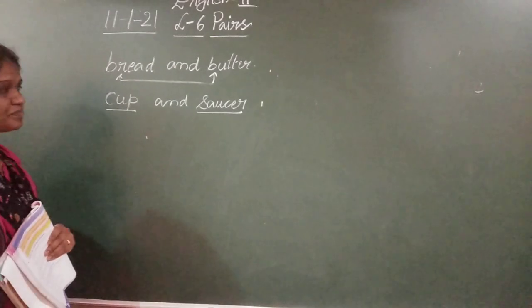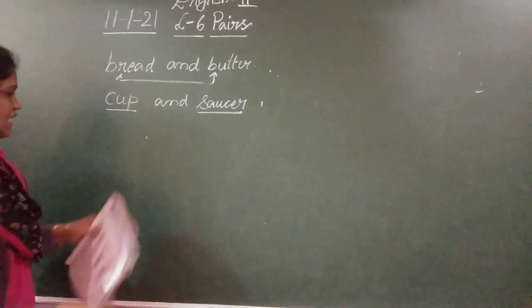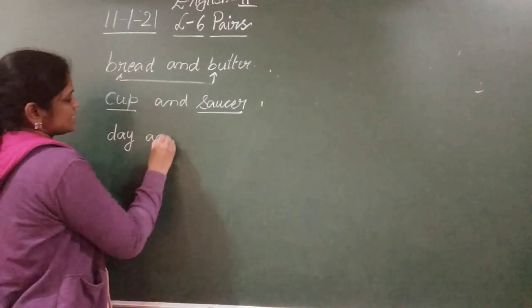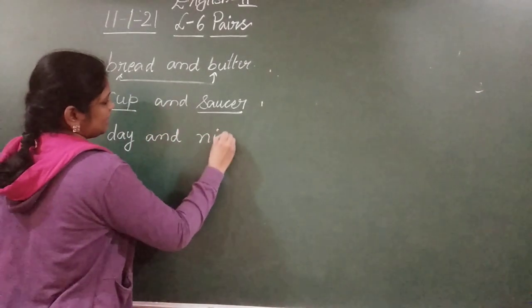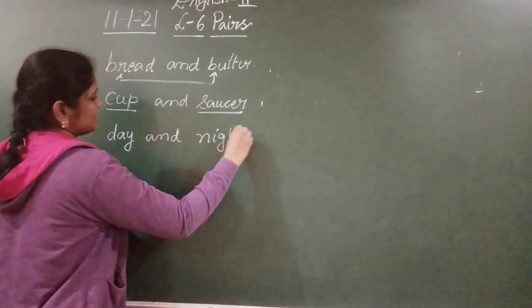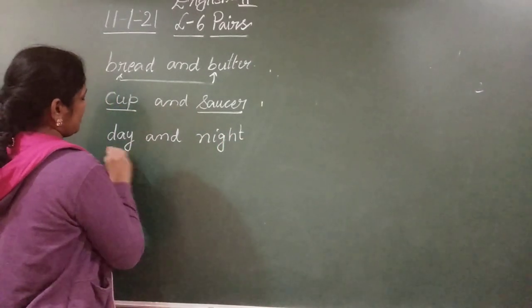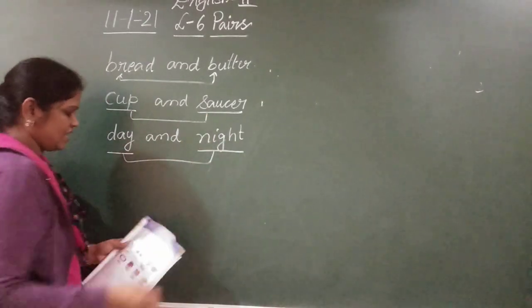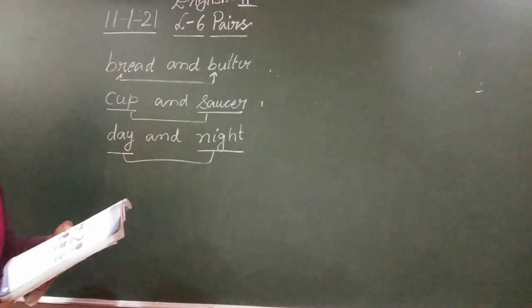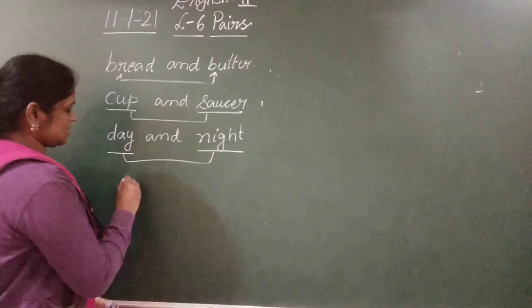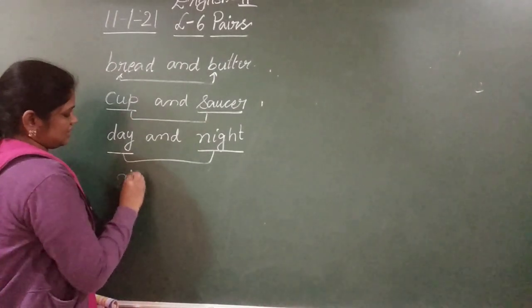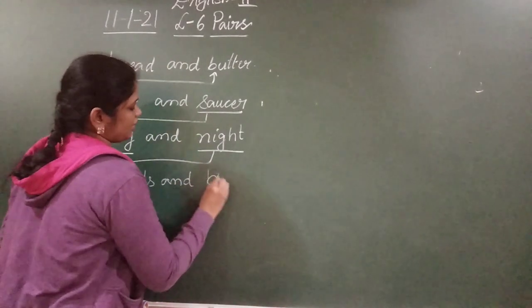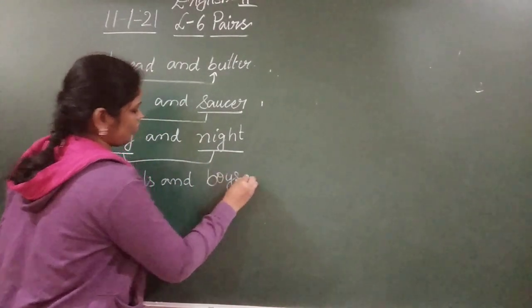And day and night. Day and night are the pair. These are the identical parts. Next, girls and boys. Girls and boys.